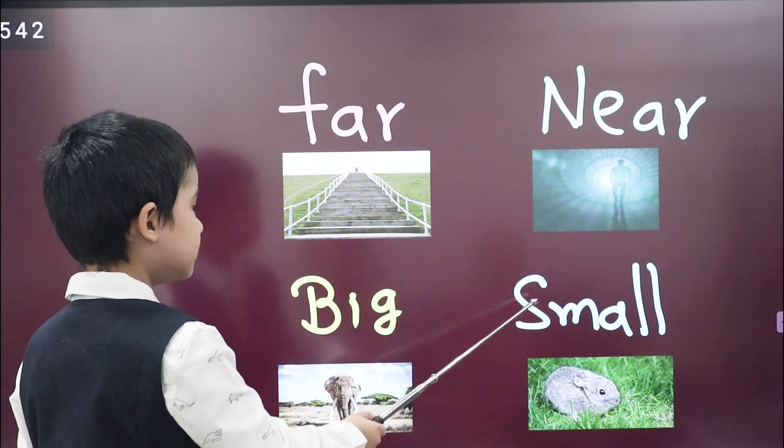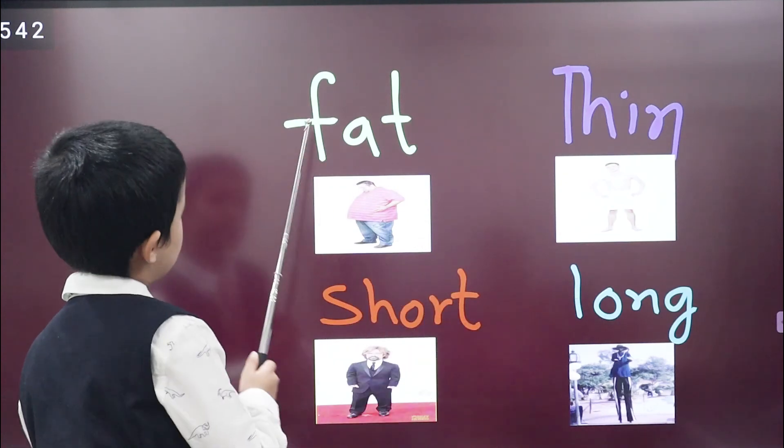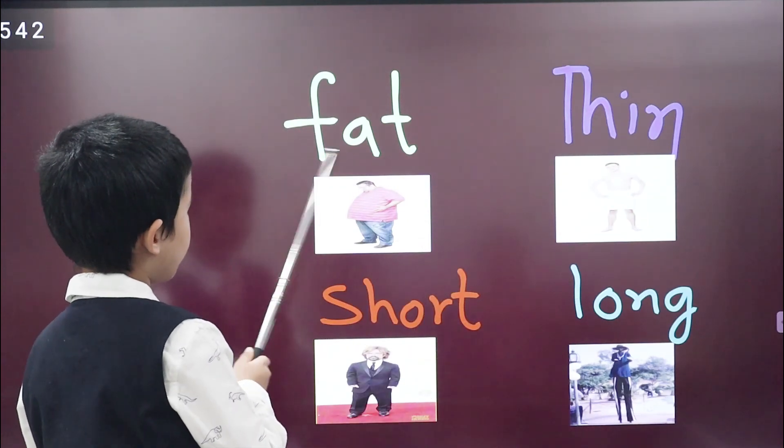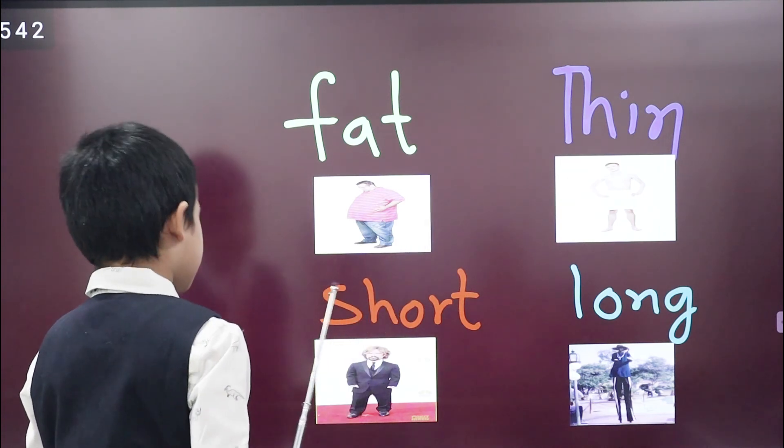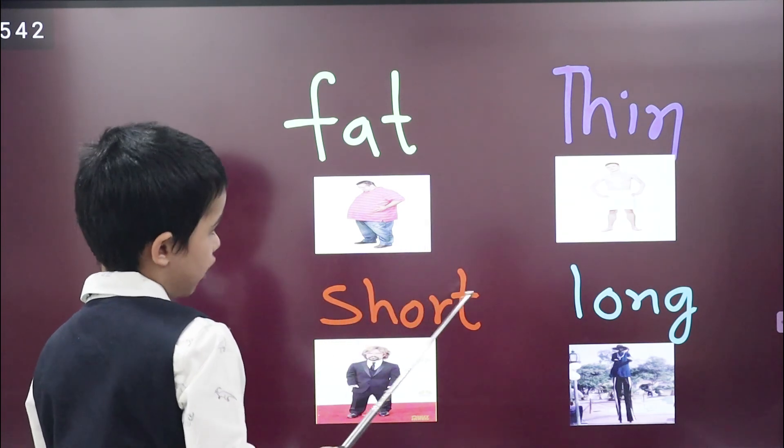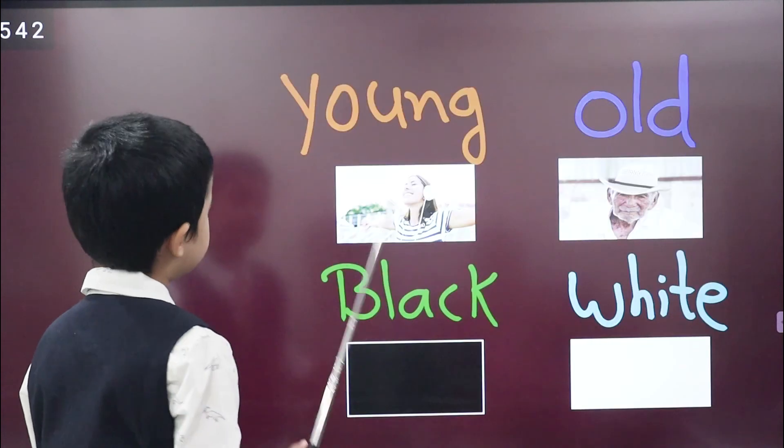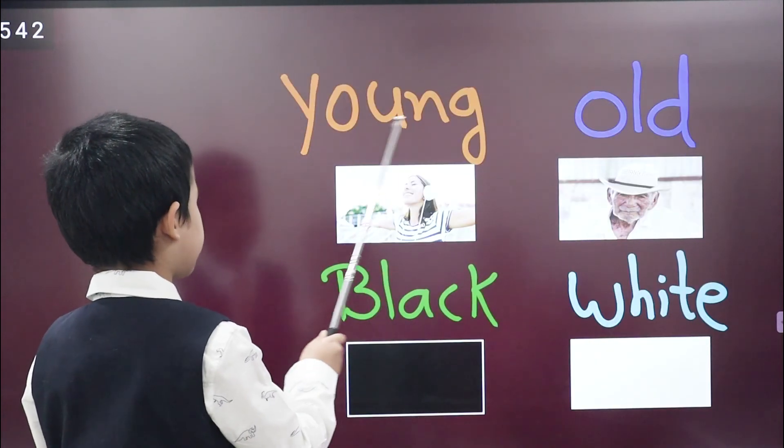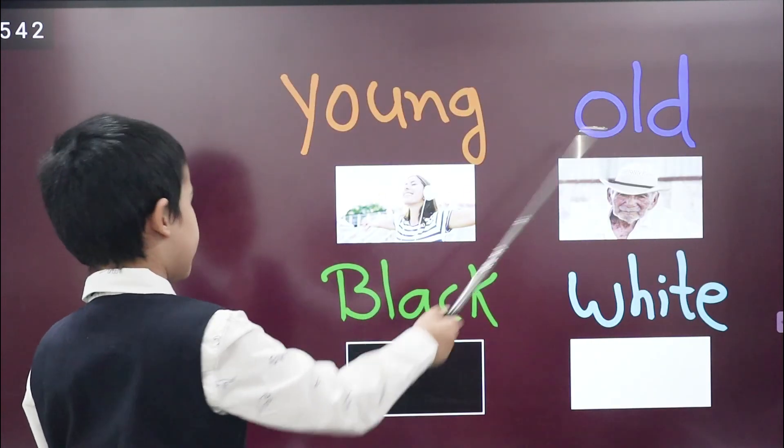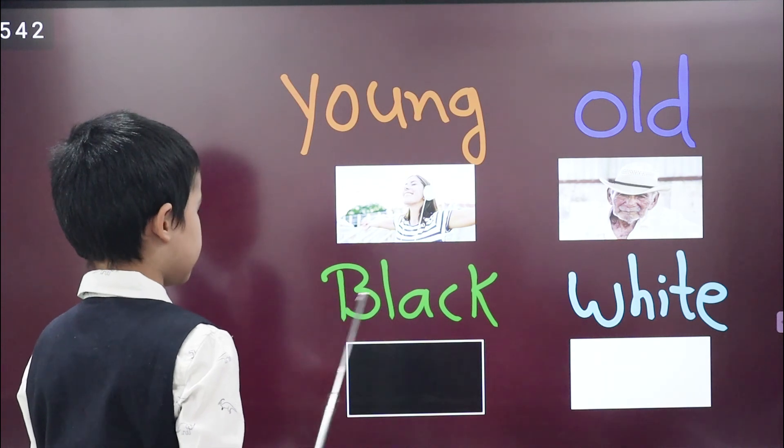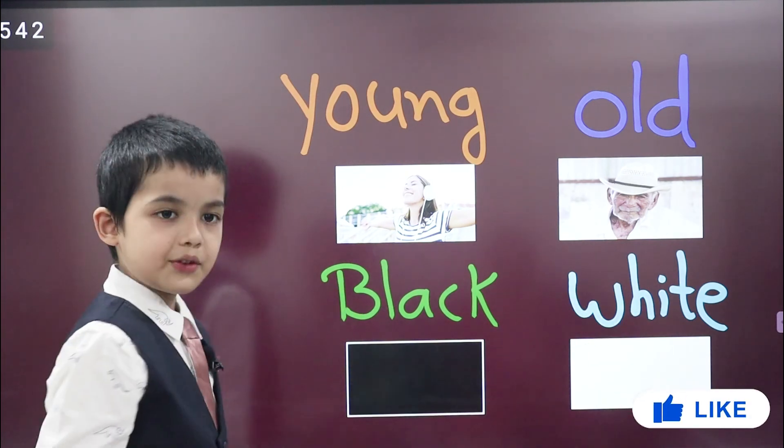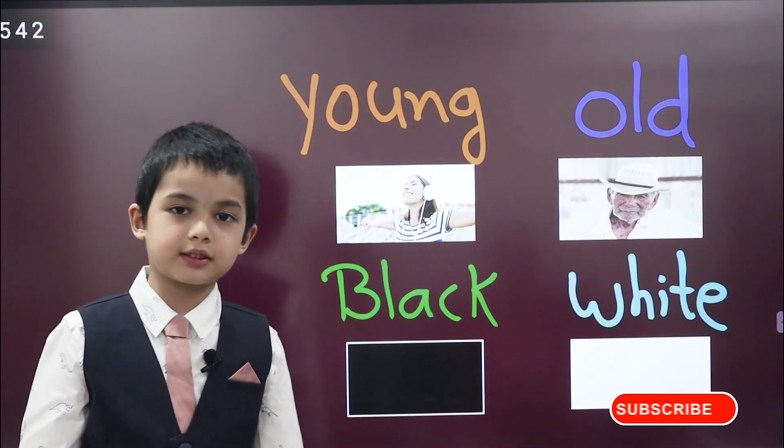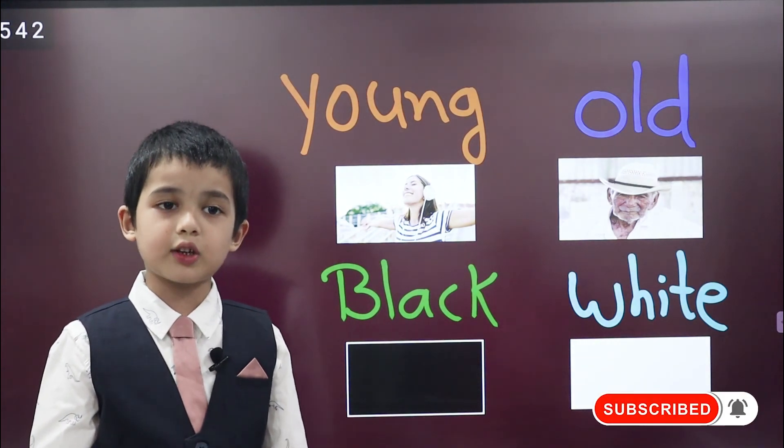What is the opposite of big? Small. Very good. What is the opposite of fat? Thin. Very good. What is the opposite of short? Long. Very good. What is the opposite of young? Old. Very good. What is opposite of black? White. Very good. If you like my teaching please subscribe and press the bell icon. Thank you everyone.